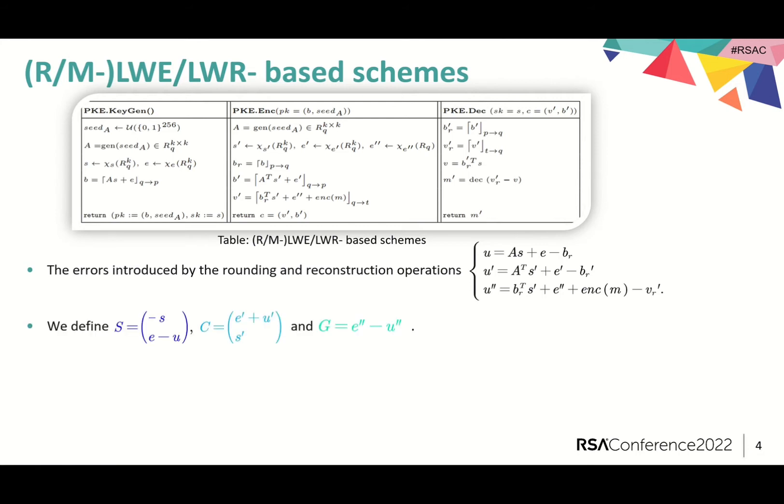We define capital S, C and G as shown here. Then, for a fixed triple (S, C, G), it can be proven that the decryption failure occurs if and only if the infinite norm of S transpose times C plus G is larger than Q over 4.